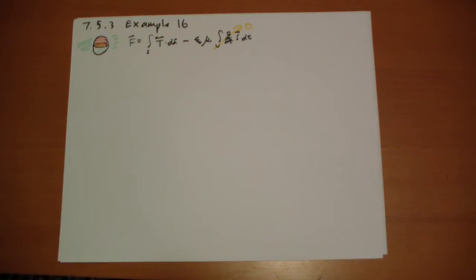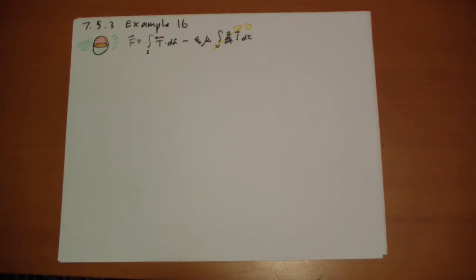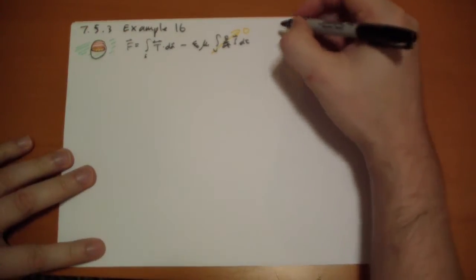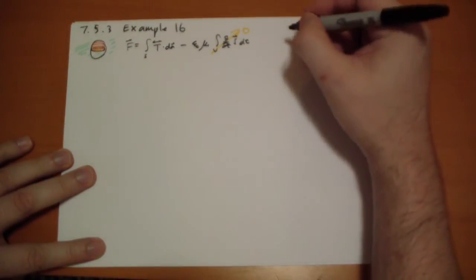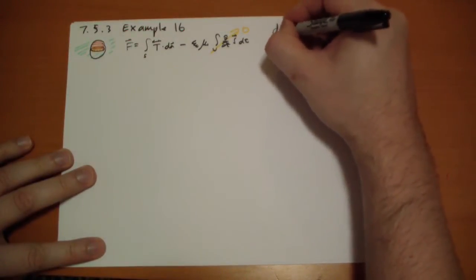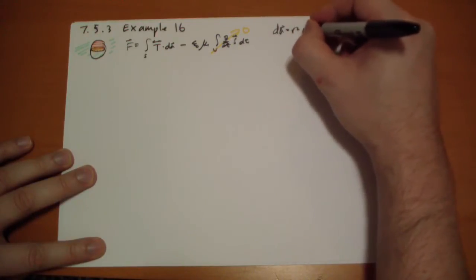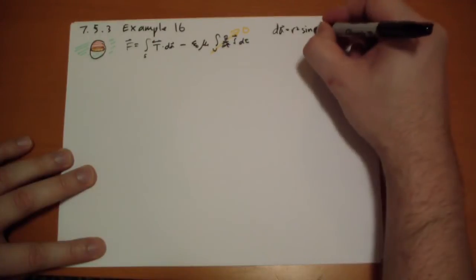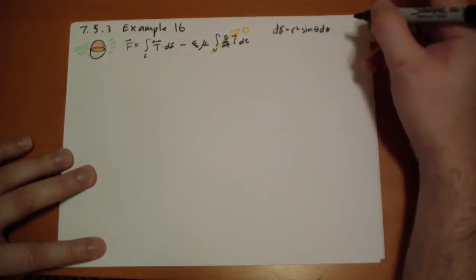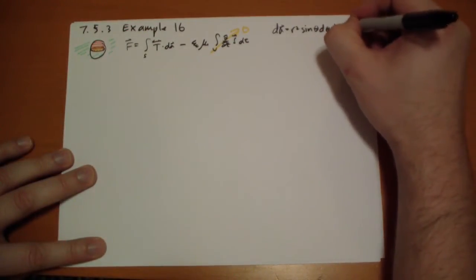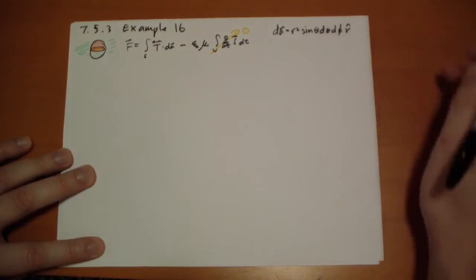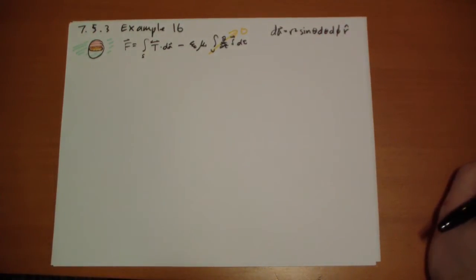So let's start with the spherical shell like he does. So let's remind ourselves that the dA vector is equal to r squared, sin theta, d theta, d phi, in the r hat direction in spherical coordinates. That'll be useful.